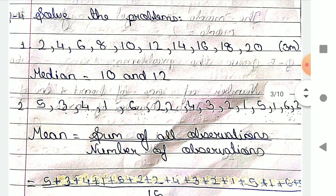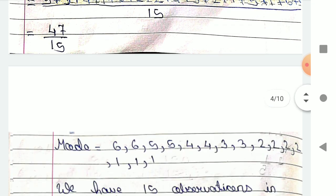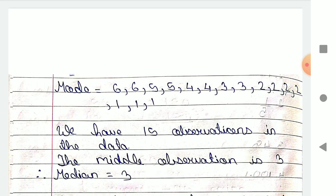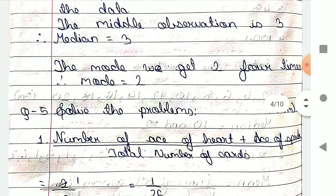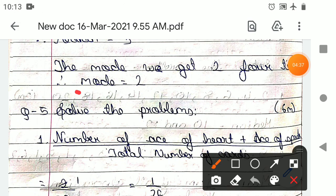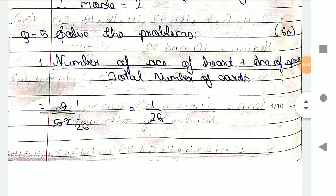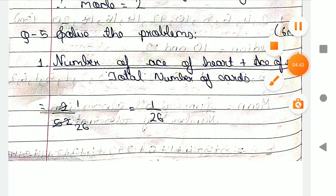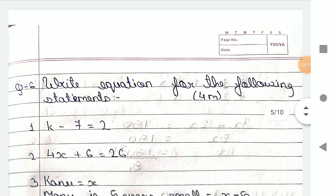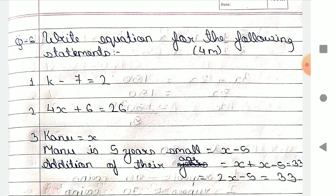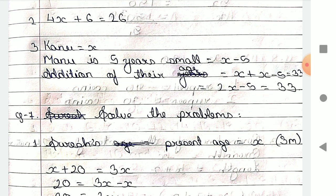For mean, median, and mode: the median is given, the mean is also given. We have 15 observations in the data; the middle observation is 3, so median is 3. The mode appears 4 times, so mode is 2. For 'solve the following problems': number of aces of heart plus number of spades — that's 2 upon 52, which gives 1 upon 26. Write the equation: k minus 7 equals 2; 4x minus 6. Canoe is x and one is 5, so x minus 5.